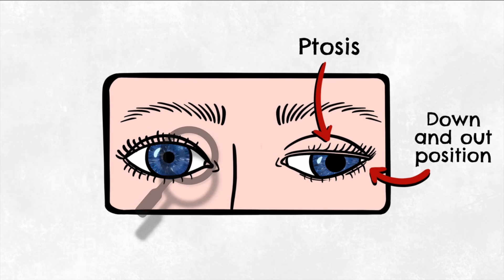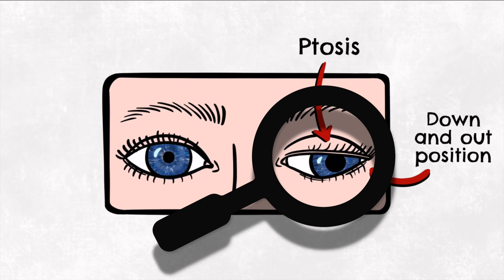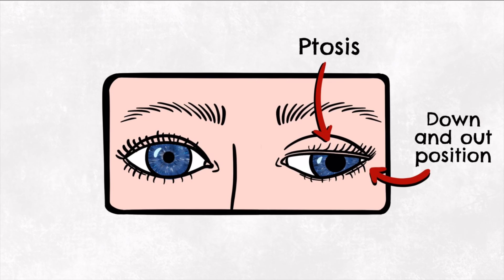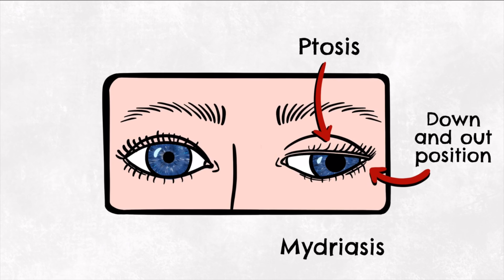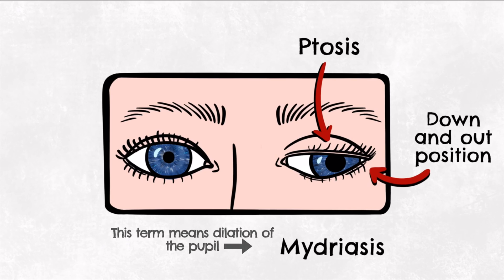If we take a closer look at the pupil here, we can see that it is dilated, and this is due to the unopposed sympathetic innervation it's receiving. Remember, the parasympathetic function comes from the third nerve, and this would normally constrict the pupil. Without it, the sympathetic innervation is going to cause dilation, unopposed. The oculomotor nerve innervates the constrictor pupillae muscle inside the iris, which would constrict the pupil in response to light. Therefore, in its absence, we'd expect no response from the pupil, and the pupil would be fully dilated due to the unopposed action of the sympathetic innervation to the iris.